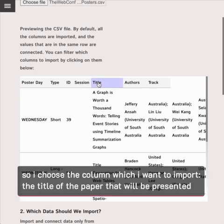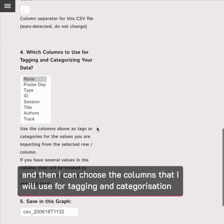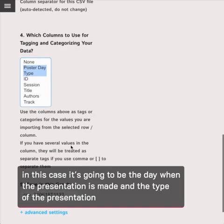So I choose the column which I want to import. In this case, it's going to be the title of the paper which is being presented. And then here it's confirmed, it's the title. And then I can also choose the columns that I will use for tagging and categorizing my data. In this case, it's going to be the day when the presentation is made and the type of the presentation.